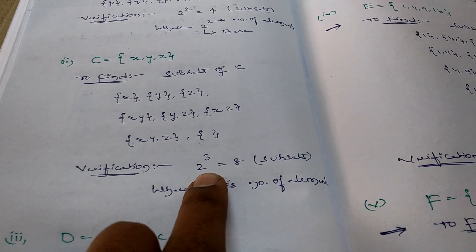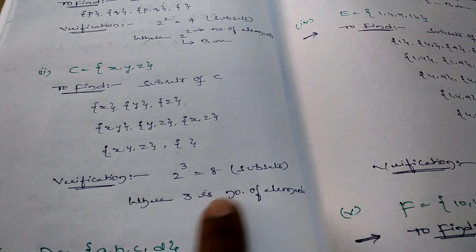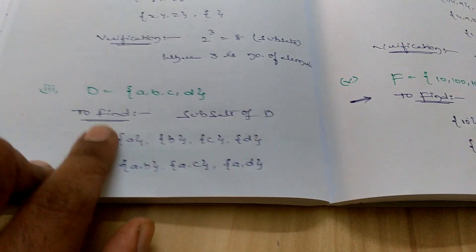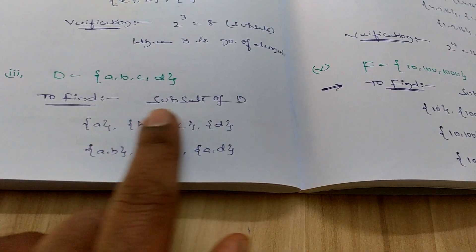We get 8 subsets. This is the verification: 2^3, where 2 is the base and 3 is the number of elements given. Coming to the third one, they gave set D equals {a, b, c, d}. To find the number of subsets for the given set D.